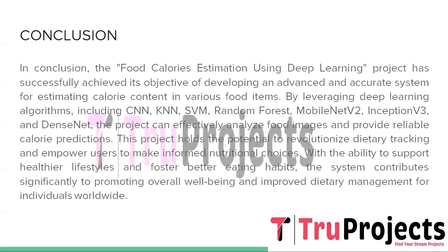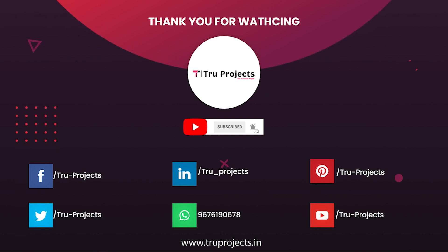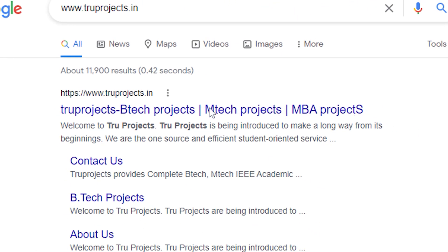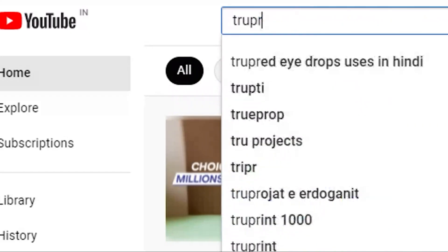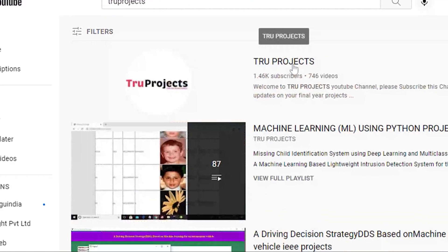This is how we can estimate the food calorie of a given image using various machine learning and deep learning algorithms. In conclusion, our project has successfully achieved its objective of developing an advanced and accurate system for estimating calorie content in various food items using CNN, KNN, SVM, Random Forest, MobileNet V2, Inception V3, and DenseNet. This project holds potential to revolutionize dietary tracking, empower users to make informed nutritional choices, and promote overall well-being. For more projects, please visit our website www.trueprojects.in and subscribe to the True Projects YouTube channel.